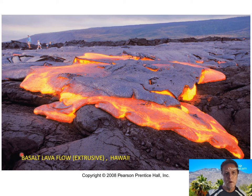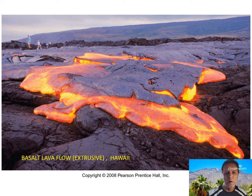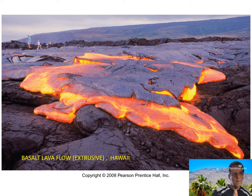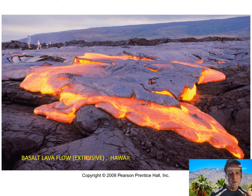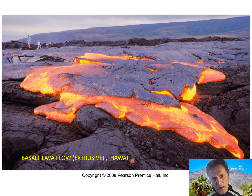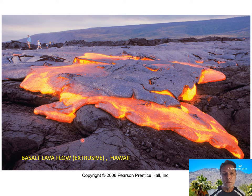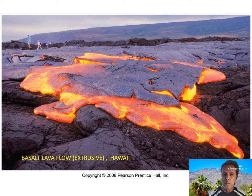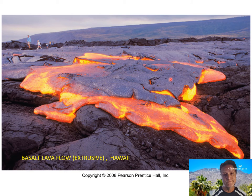This is basalt — it's mafic, high in iron and magnesium, which makes it dark in color and also means it's very hot when melted — 1200 degrees or more — because of those elements. This is a basalt lava flow in Hawaii; it's extrusive because it's at the surface of the Earth. Only the Big Island of Hawaii has active volcanism. You wouldn't want to get too close — even if there's a black crust on top, it may be thin and could break through.